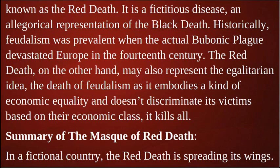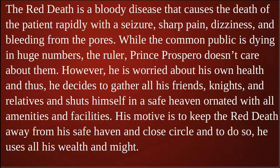In a fictional country, the Red Death is spreading its wings. It is a bloody disease that causes rapid death with seizures, sharp pain, dizziness, and bleeding from the pores. While the common public is dying in huge numbers, the ruler, Prince Prospero, doesn't care about them. Worried only about his own health, he decides to gather his friends, knights, and relatives and shuts himself in a safe haven, ornated with all amenities and facilities, using all his wealth and might.